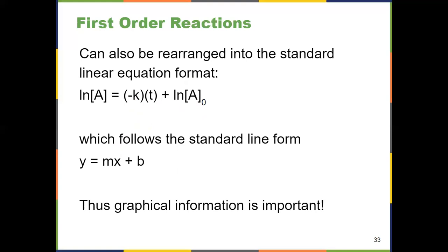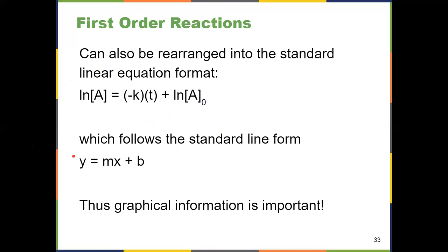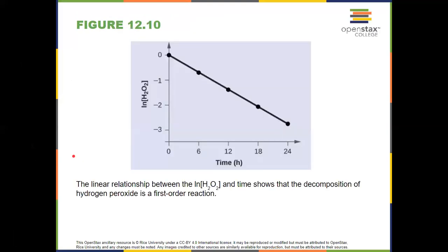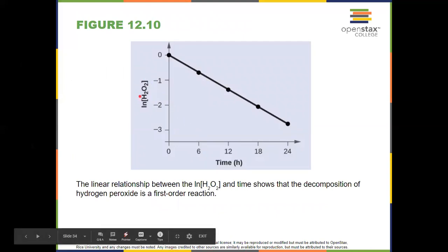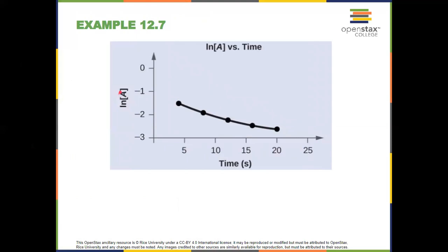By the time you're done with this video, you should be able to look at a graph and tell the order of the reaction. If a plot of natural log of concentration versus time gives a linear slope, then you have a first-order reaction. If the plot of natural log of concentration versus time is not linear, then the reaction is not first-order — it could be second, third, or zero order, but you just know it's not first-order from that graph.